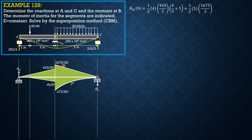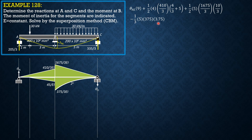Continuing: plus one-half of 5 × (1675/3) × (2/3 of 5, which is 10/3), then minus one-third of 5 × (375/3). The distance of the centroid of this area from the right is 5 minus 1.25, which equals 3.75.